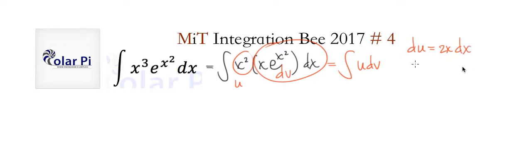we see that du is 2x dx and v is a half e to the x squared.